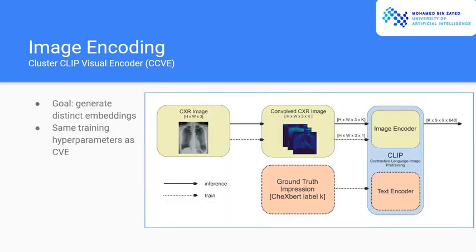The last encoding method is the novel encoding that we proposed, the Cluster CLIP visual encoder. When we were designing it, our goal was to generate distinct embeddings such that the decoders can differentiate between different semantic information present in the image.